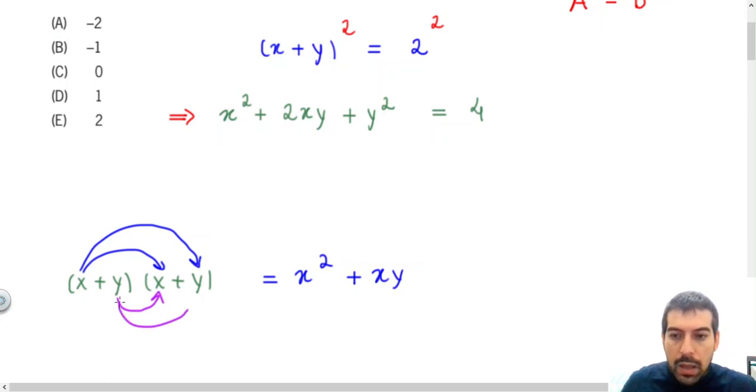x times y will be xy, y times y will be y squared, since the product is commutative, and y times y will be y squared.